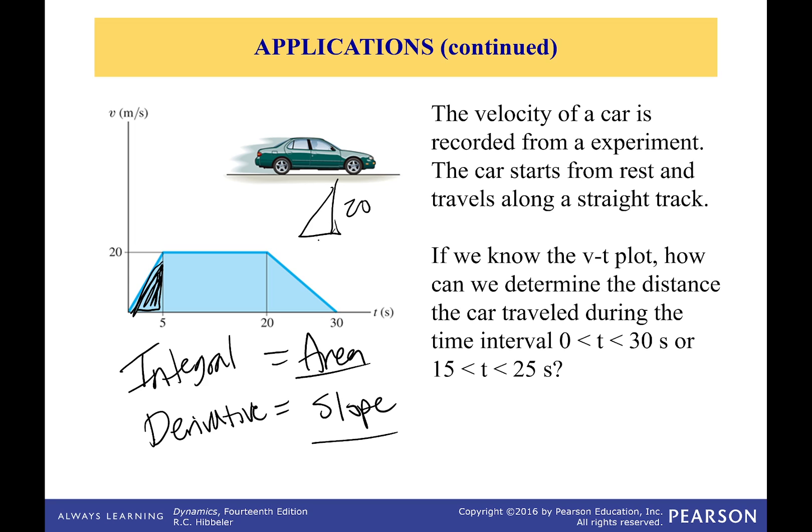And so I know the area of a triangle. Okay, that's triangle. That's 20 high, five base. One half base times height is one half five times 20 is equal to 50. So how far did this go in the first five seconds? It went 50 meters.